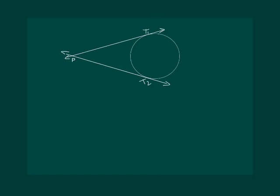Then the length of the segment of the tangent from the external point P to the point of contact T1 is called the length of the tangent. That means PT1 and PT2 are the length of the tangent.